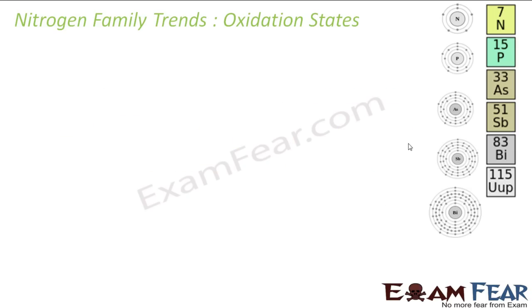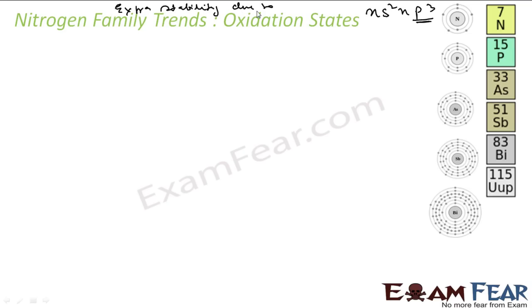Now let's talk about oxidation states. Let's see Nitrogen first. The electronic configuration for this group is ns² and p³. P is half-filled, so it is extra stable — extra stability due to half-fill.